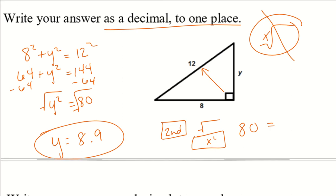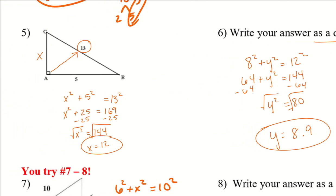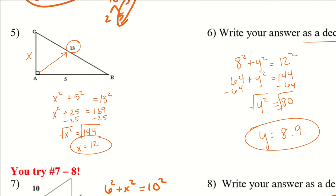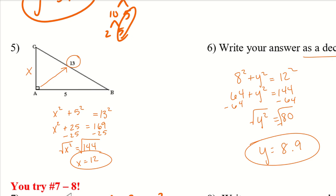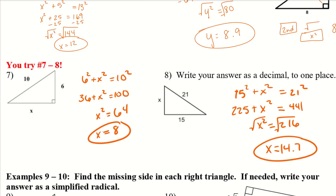Go ahead and try numbers 7 and 8 — for number 8, write your answer in decimal form. For number 8, the answer is X equals 14.7. If you got 14.6, the second decimal digit was a 9, so since we're rounding to the first decimal place, we round up to get 14.7.